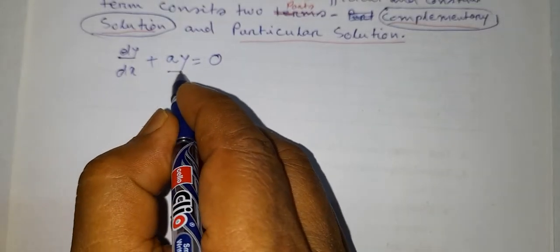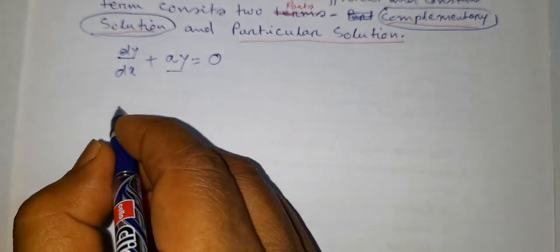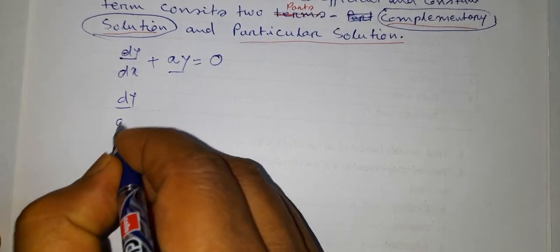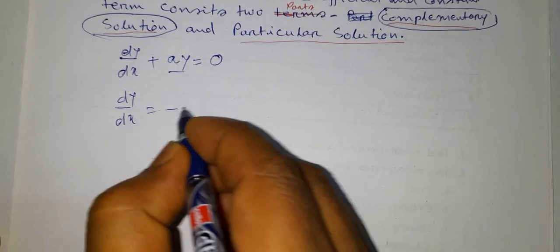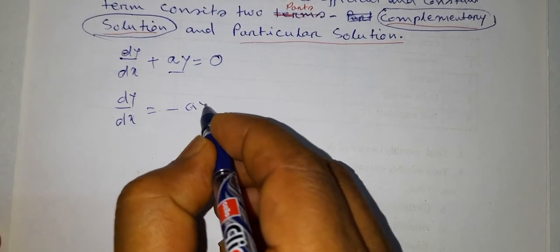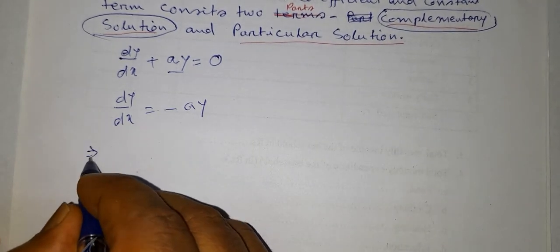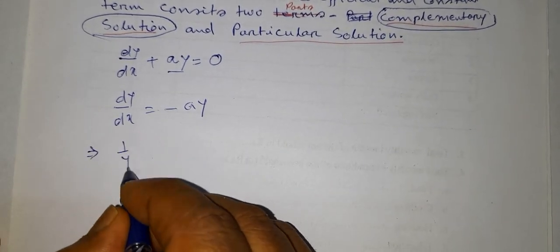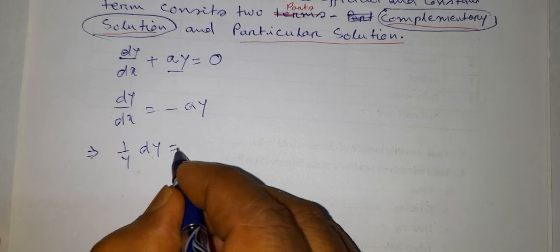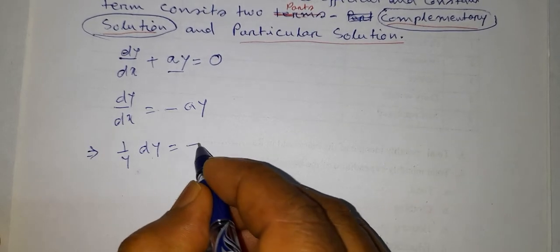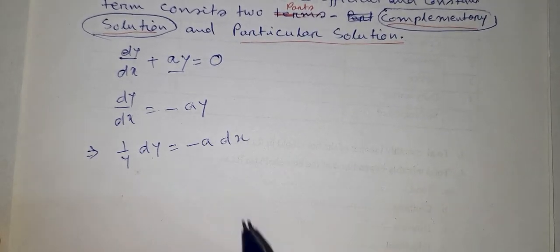Now, taking the constant term to the right-hand side, we get dy/dx = -ay. Again, separating variables, we get (1/y) dy = -a dx.